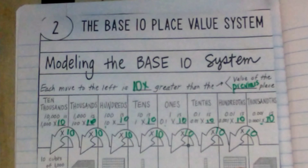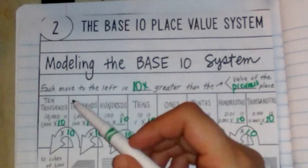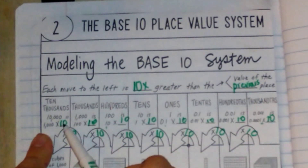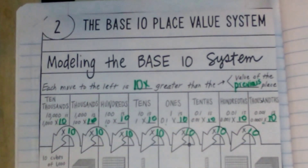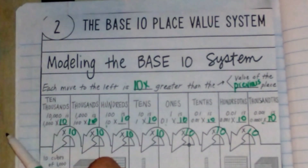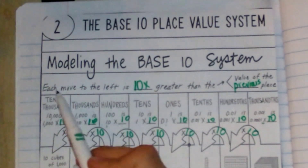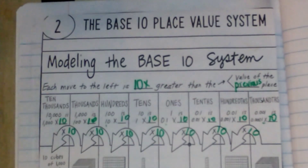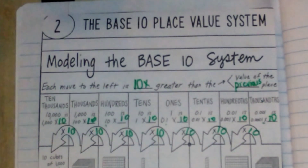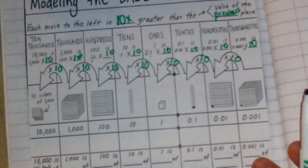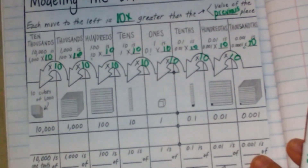So the ten thousandth is the thousands times 10, and I could keep going. The hundred thousandth is ten thousandth times 10. So each time I move.